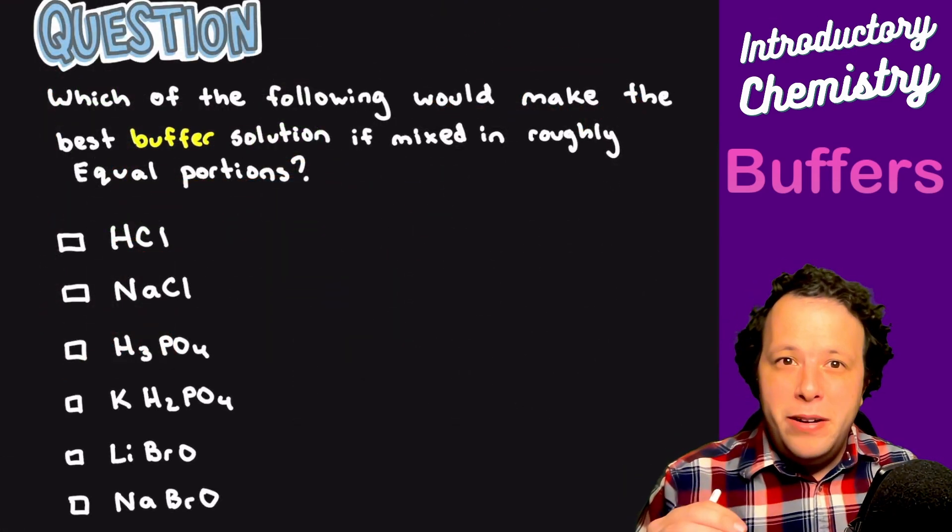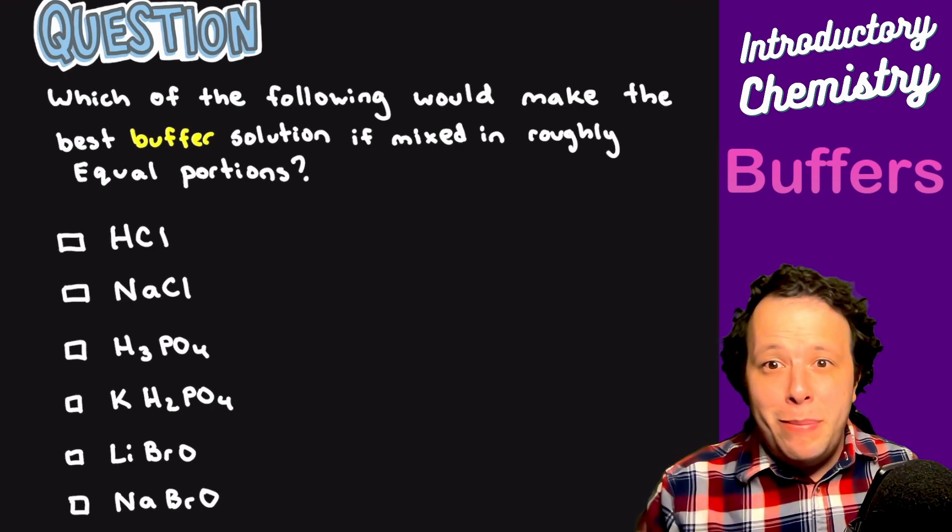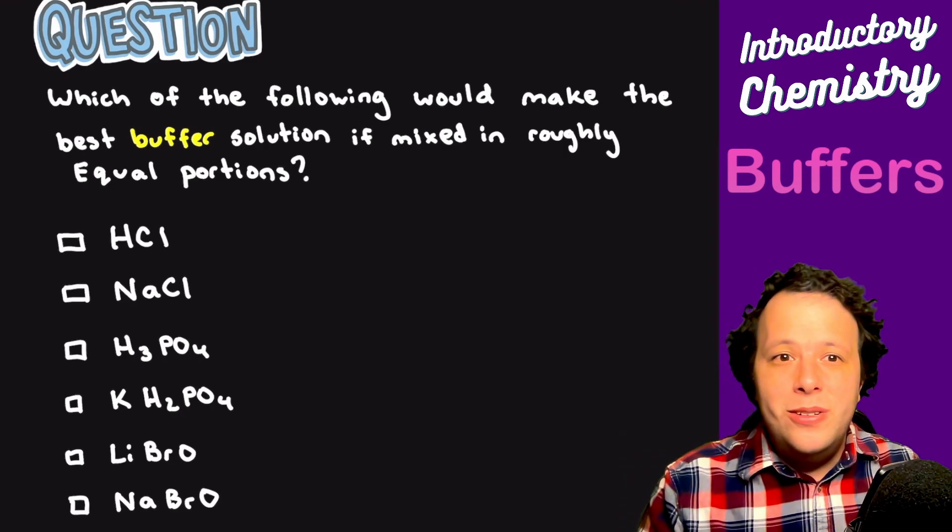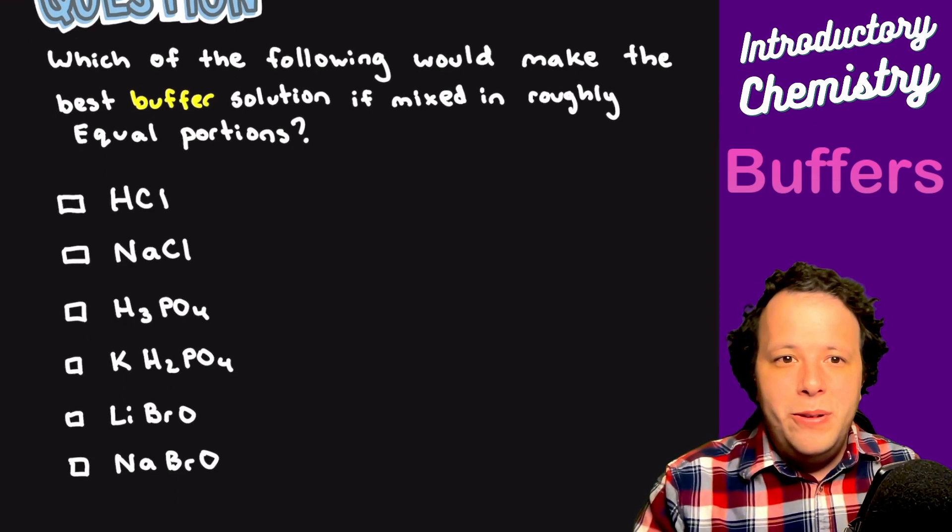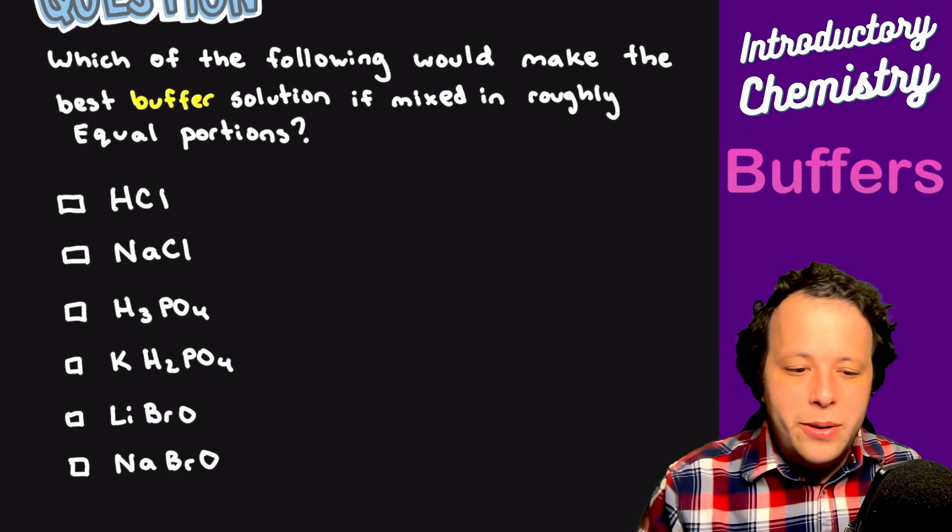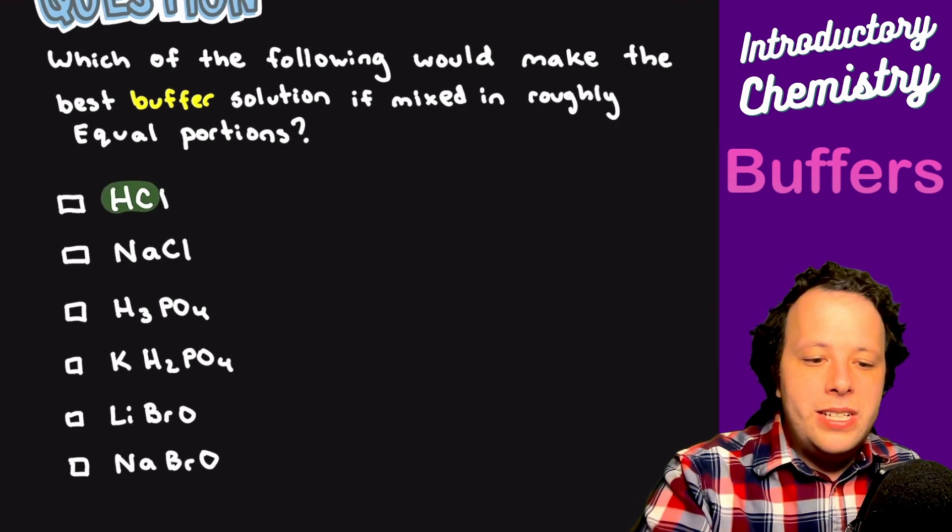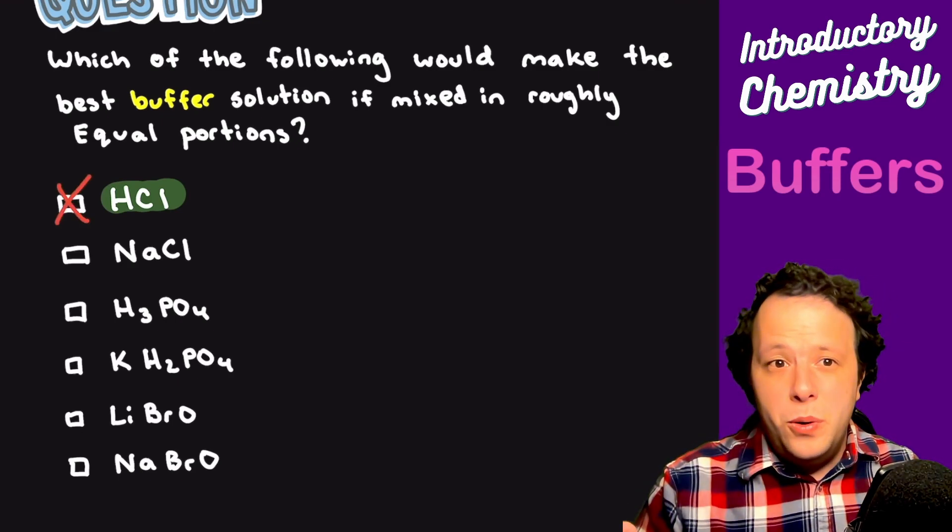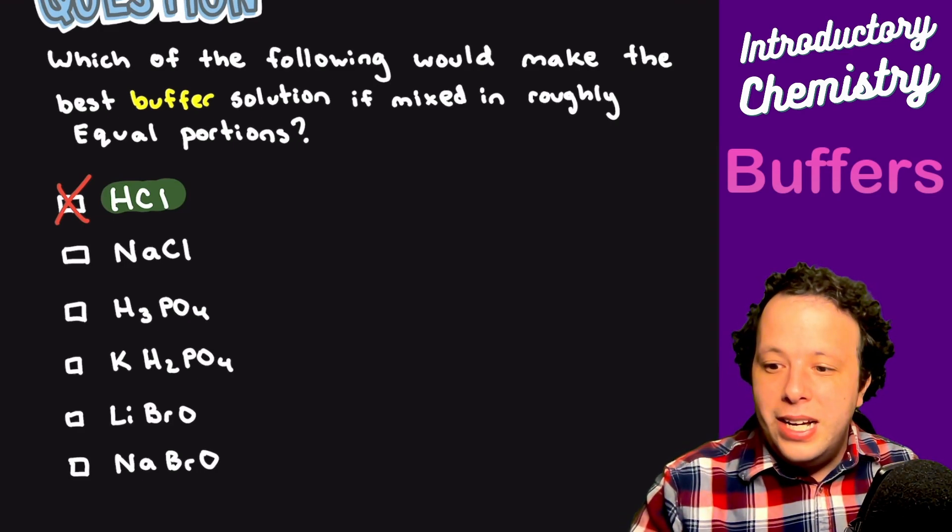Which of the following would make the best buffer solution if mixed in roughly equal proportions? Here we don't have pairs. We have all these individual pieces. The first thing you want to do is let's try to see if we can eliminate any common pairs or especially anything that's considered a strong acid or base. So if we look over here, what can we use? We have HCl. HCl is a strong acid. So we can quickly say that's a no. That's not going to work.